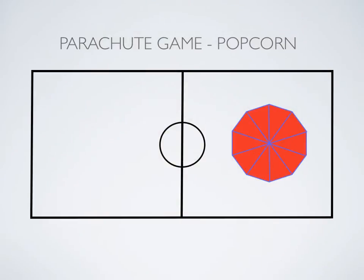So here's our parachute and you're going to have your students standing. You're going to tell them that you're going to make some popcorn today. The parachute is going to represent a pan, and you're going to tell them when it's cold there's no movement. You can bring some science in if you want, you don't have to though.